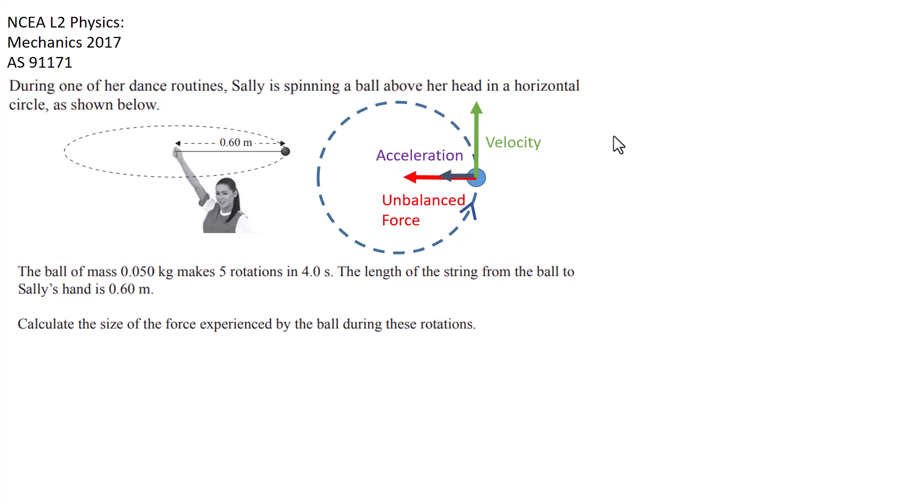If we were to consider air resistance as well in the opposite direction to the green arrow, then we should know that the velocity would decrease over time as friction or air resistance reduced the kinetic energy of the ball, lowering its velocity.